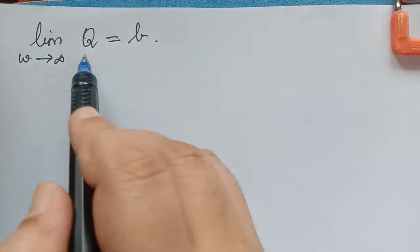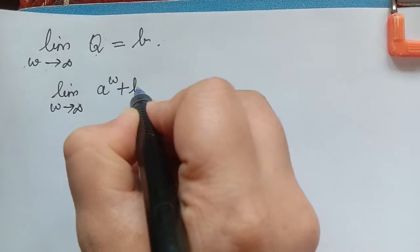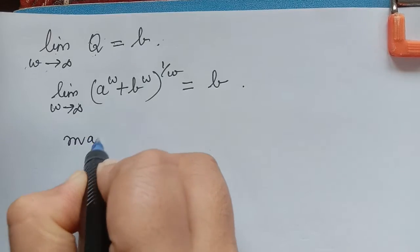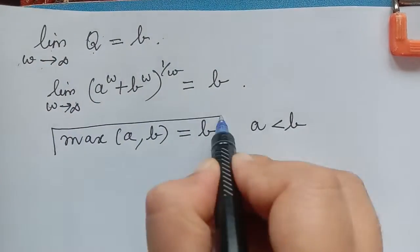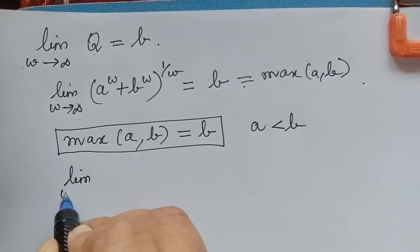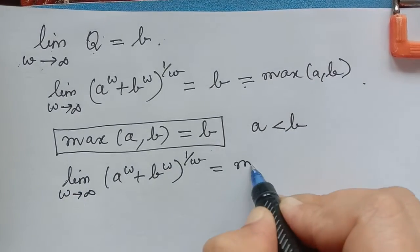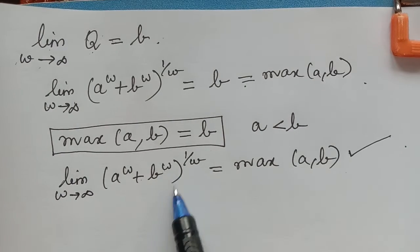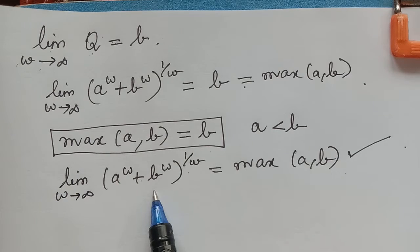Substituting back q, we get limit w→∞ of (a^w + b^w)^(1/w) equals b. On the right hand side, maximum of a, b equals b since we chose a less than b. So this b can be written as maximum of a, b. Hence we have proved that limit w→∞ of (a^w + b^w)^(1/w) equals maximum of a, b, completing subcase 1. Next, in subcase 2, we choose 1 as the minimum value and prove the theorem.